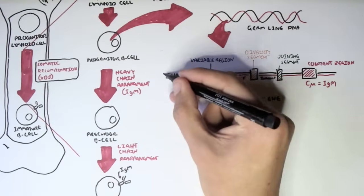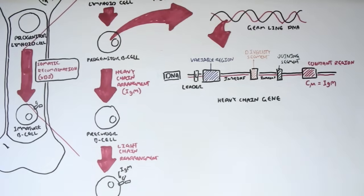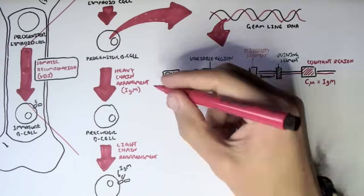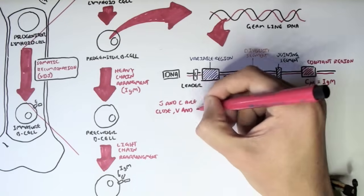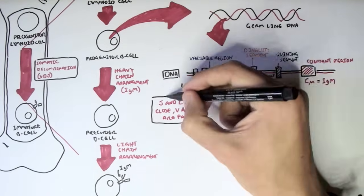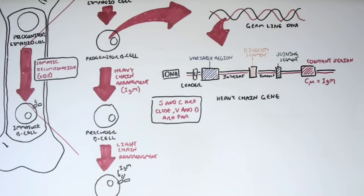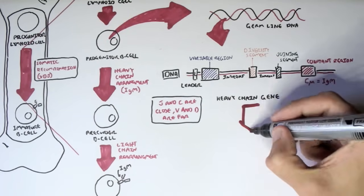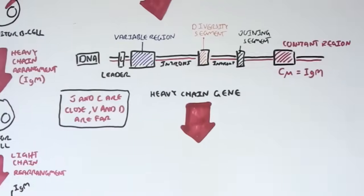And now this is in the DNA. And the DNA contains introns, obviously. So a point to make is that the J and C region are in close proximity, however, the variable region and the diversity region are far away from each other.